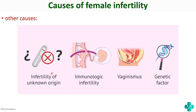Other causes of female infertility include infertility of unknown origin and immunological infertility — where antibodies to sperms cause their destruction, or there is fetal-maternal incompatibility such as Rh group incompatibility, preventing proper implantation or causing failure to thrive. There is also vaginismus, which is painful intercourse preventing proper penetration, and genetic factors that may cause recurrent abortions.